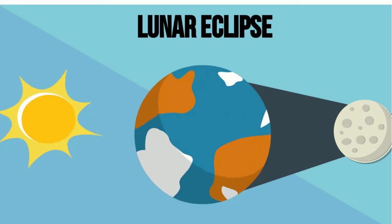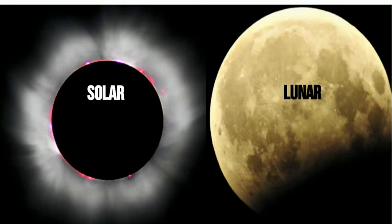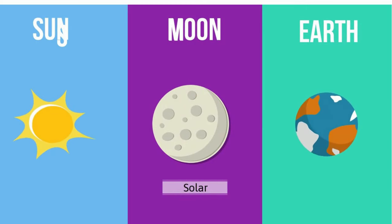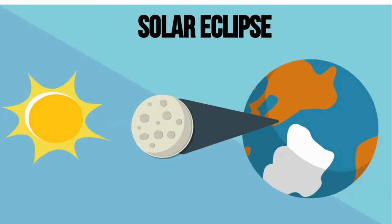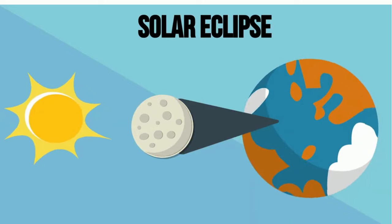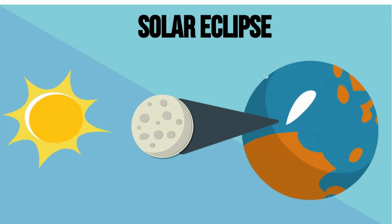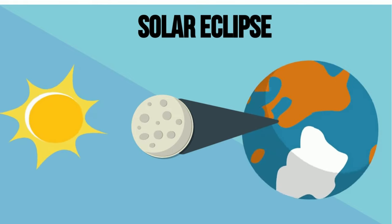A couple of ways to remember the difference between a solar and lunar eclipse: the order of the celestial bodies during a solar eclipse is Sun, Moon, Earth — or SME. Also remember that the shadow of the Moon only falls on a small portion of the Earth, and people during this portion can look towards the Sun to see the solar eclipse. Remember, never look directly at the Sun.